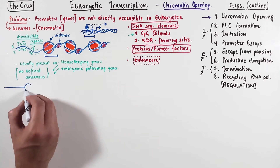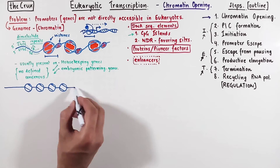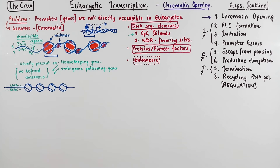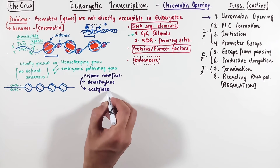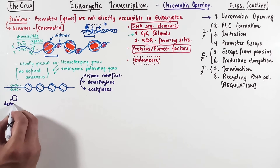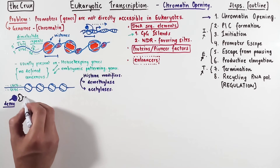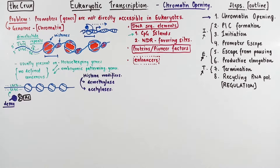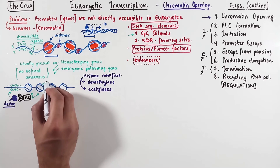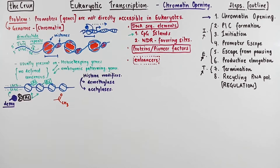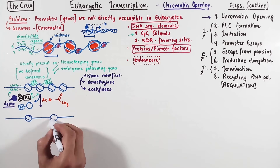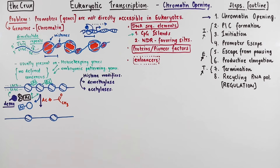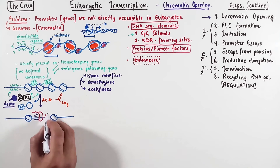Let's understand how CpG islands work. Here we have our DNA wrapped around histones, and the CpG islands are sitting next to the promoter regions that are occupied by histones. These CpG islands attract histone modifiers, which typically are enzymes like histone demethylases and histone acetylases. And because CpG islands are only two nucleotides in length, they can be recognized by these enzymes even if there are some histones surrounding them. Once these enzymes are recruited at the CpG islands, they remove the methyl group from histones in that region and add acetyl groups to those histones. The acetyl group reduces the overall positive charge of histones, and since DNA is negatively charged, when the histones become less positively charged, they lose their attraction towards DNA, resulting in the unfolding of the DNA. Once enough histones are removed like this, the promoter regions become accessible for transcription factors, and this binding will recruit RNA polymerase to start the process of transcription.